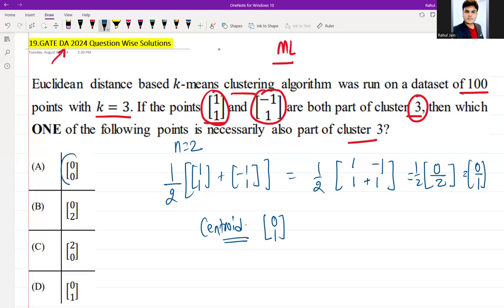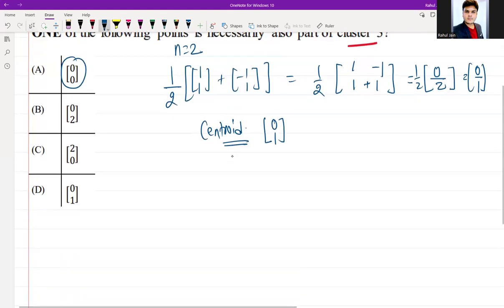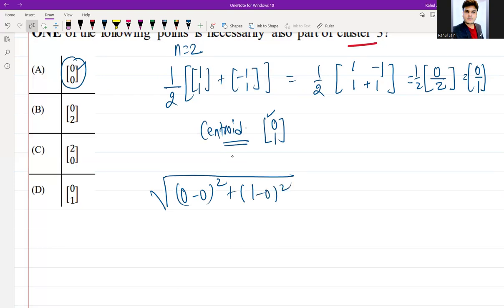First option is (0,0). If it is necessarily part, then what I need to do is calculate the Euclidean distance, and that is (0-0)² plus (1-0)². So at the end I am getting 1 here. So this was option A.